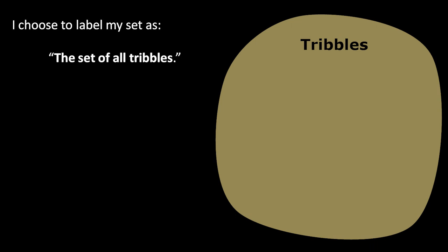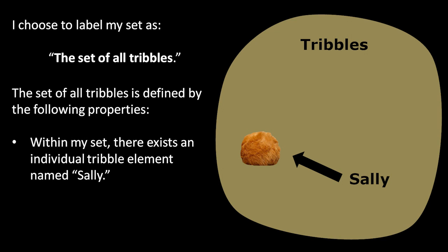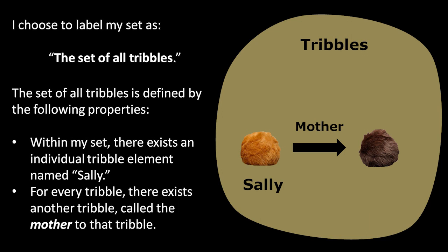But today I'm going to define my own set according to my own rules. I first need to give this set a name, so let's just call this the set of all tribles. I'm free to define my set in terms of whatever arbitrary properties I want. So I'm going to define the set of all tribles by the following properties. First, there must exist an individual trible element named Sally — I could have called her Rebecca or the Queen Trible, but Sally is nice and simple. Therefore, whenever we speak of some collection of tribles, Sally is going to play a role by definition. Next, for any given trible element, there necessarily exists another trible element called the mother of that trible. Why? Well, that's just what Star Trek canon says. All tribles are supposedly born pregnant, so I want all my tribles to have a mother that birthed them.